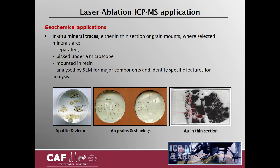We also do in-situ mineral traces, either in thin section or on grain mounts, where selected minerals are firstly separated, picked under a microscope, mounted in resin, and analyzed by SEM for major components and to identify specific features for analysis. So we have a mount with some apatite and zircon grains. We can have gold grains and gold shavings mounted into resin, or we can also do gold minerals included in thin section.